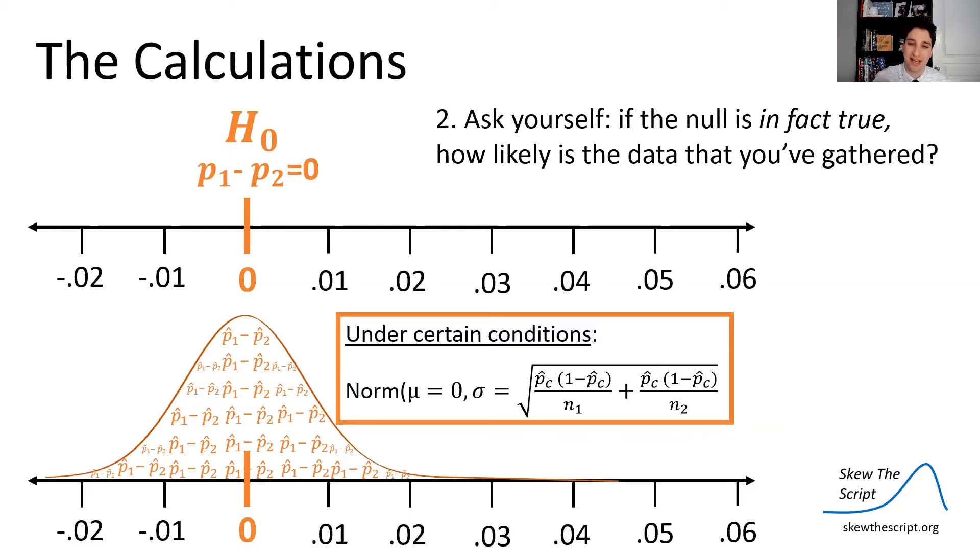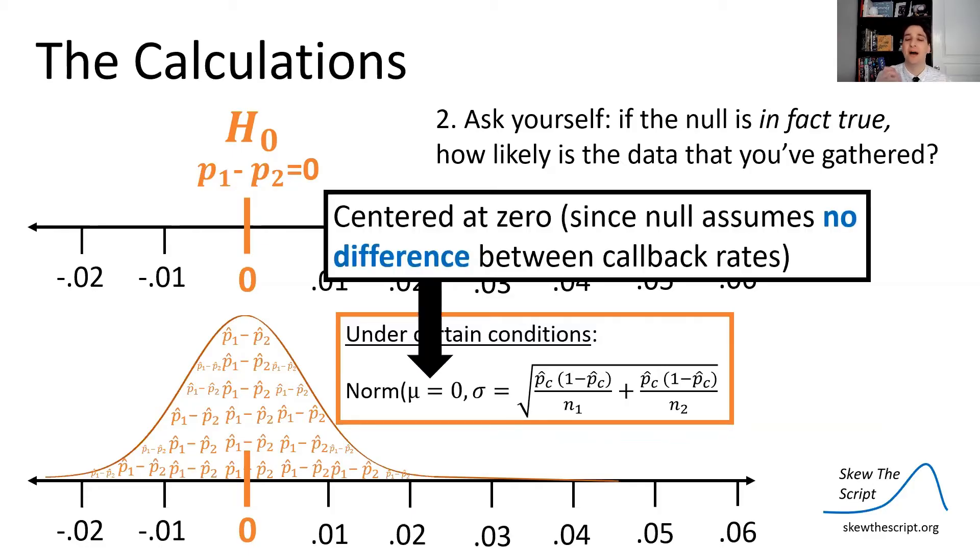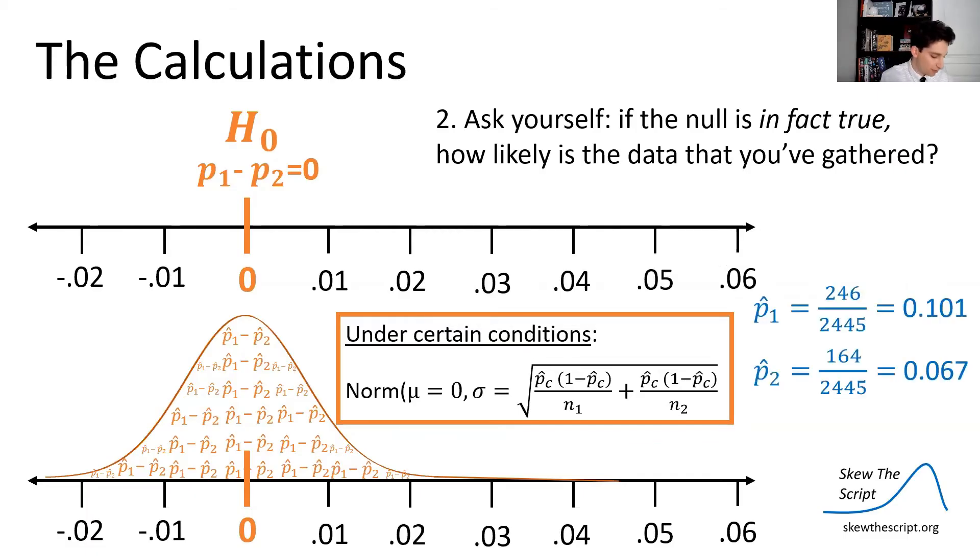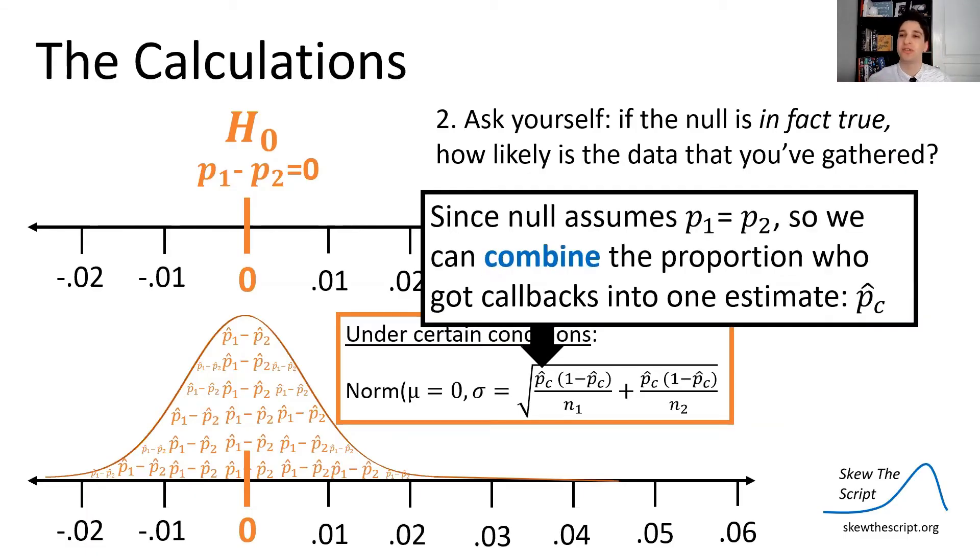And this is really a standard error based on estimates. And note that we're using combined proportion, which we'll talk about in a second. So we're centered at zero. And we're assuming that P1 equals P2. So we're going to use the combined proportion of callbacks from the groups to estimate what that proportion would be.